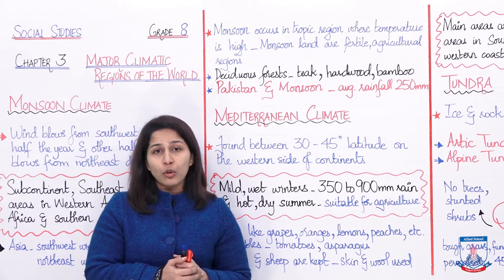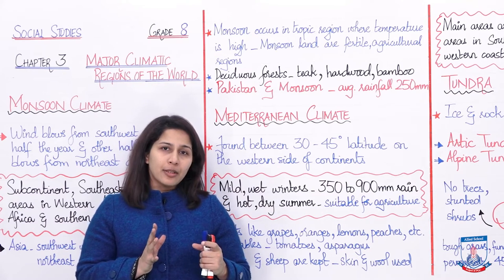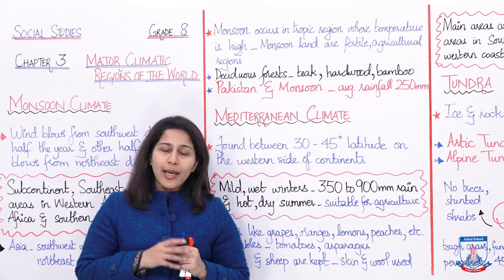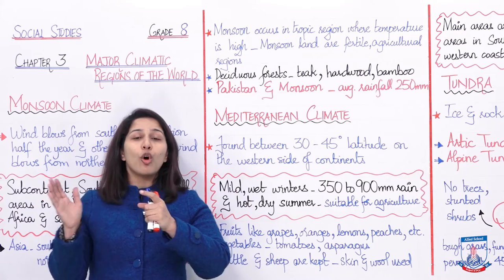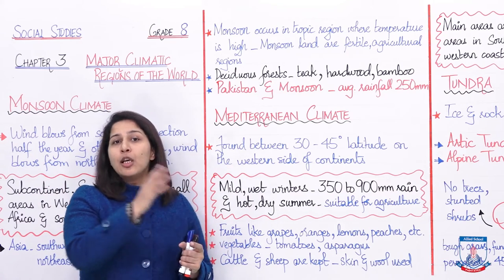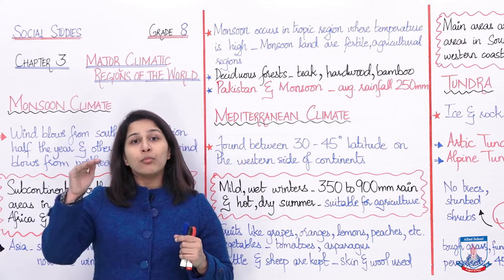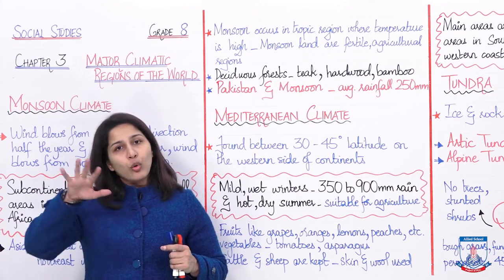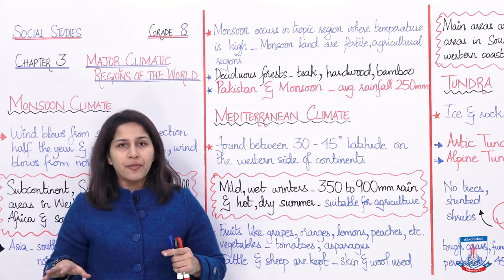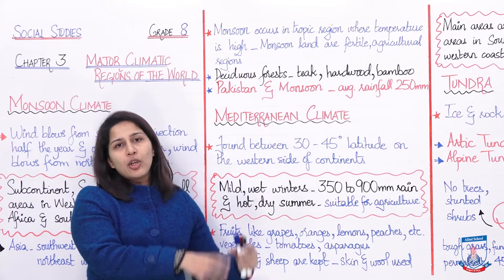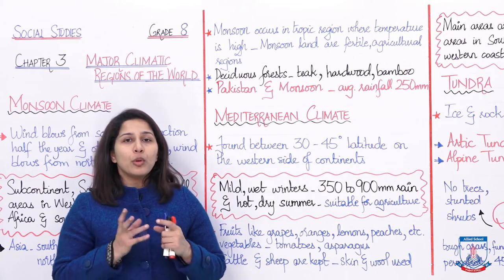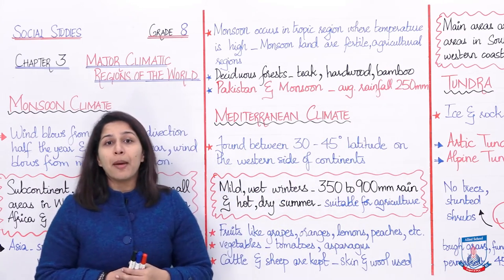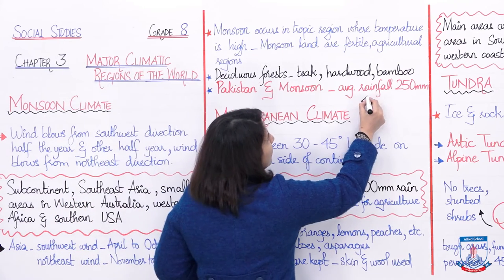There is a disadvantage: jab northwest direction se winds aati hain toh woh all the way India ko cross karke Pakistan pahunchti hain. Jab woh India ko cross karti hain toh most of the water vapor and moisture India mein rainfall ke form mein gir jaata hai. India, Pakistan ki nisbat zyada rainfall receive kar leta hai. Pakistan ka average rainfall is 250 mm whereas India mein it is 450 mm.